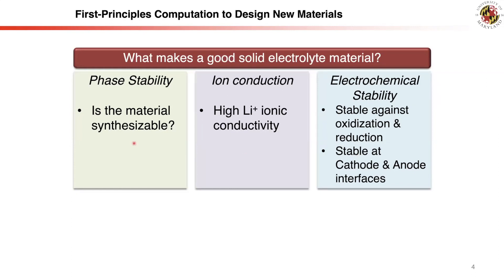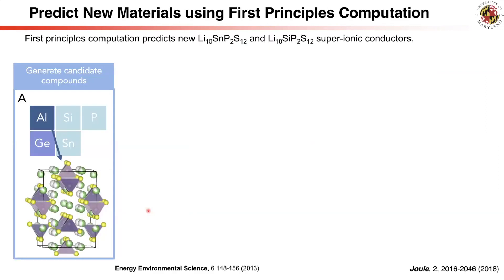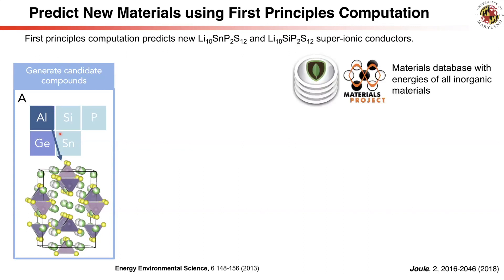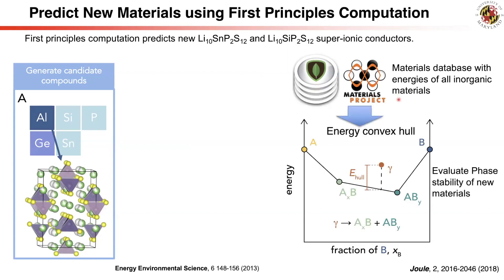First, phase stability — it is critical whether the material predicted in computation can be synthesized in the lab. This can be evaluated using the phase diagram from computation. To generate new materials, we substitute the germanium in the LGPS structure with other cations such as silicon or tin, then calculate the energy of these predicted materials using first-principle methods based on density functional theory. We also obtain energies of all materials in the same chemical space from a computation database such as the Materials Project, and construct the convex hull of energy.